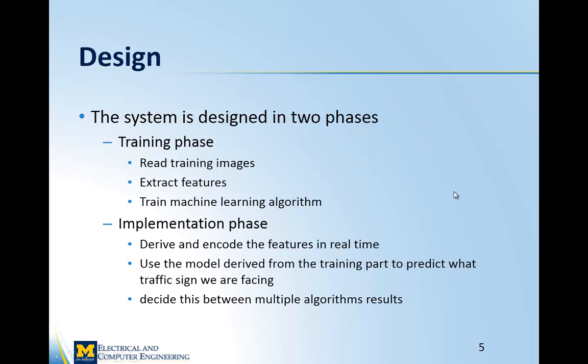The system is designed in two phases: the training phase and the implementation phase. In the training phase we read the training images, extract features using SURF — which is an advanced version of SIFT that we learned in class — and train the machine learning algorithms to extract a model. For the implementation phase we derive and encode features in real-time, then use the model from training to predict what traffic signs we're facing. There is also an optional phase of deciding between multiple algorithms which result to trust.